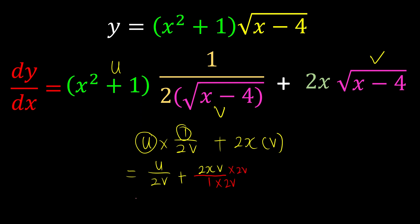Then after that, what should we do? Since they now have the same denominator, they can be under one roof. u + 2 times 2 is 4. 4xv² over 2v.